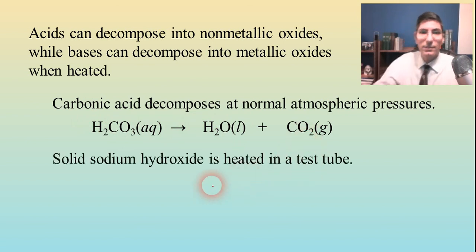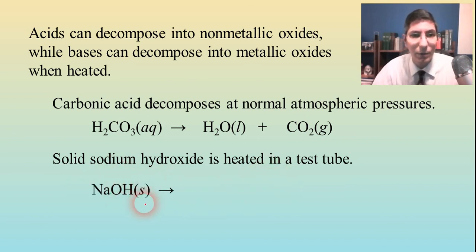On the other hand, here's a base: solid sodium hydroxide is heated in a test tube. We all know sodium hydroxide is NaOH. When we heat it up, we're going to make water. What's the other product? A metallic oxide, and the metal is sodium, so sodium oxide, Na2O. This one's not a balanced equation—we have to put a two in front of NaOH to balance our sodiums, and that balances the oxygens and hydrogens as well.